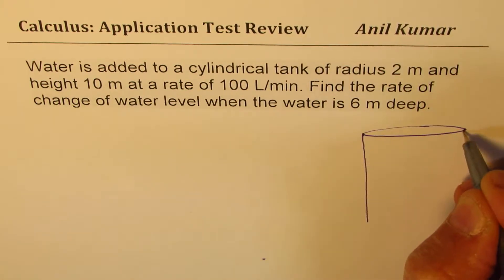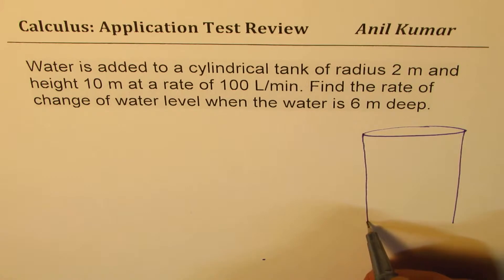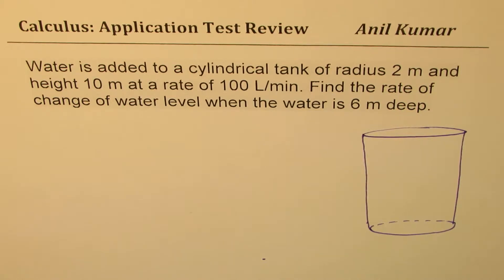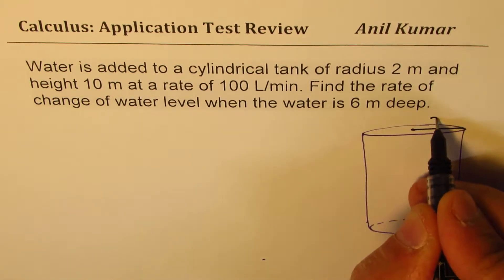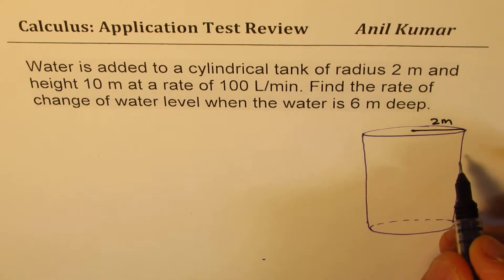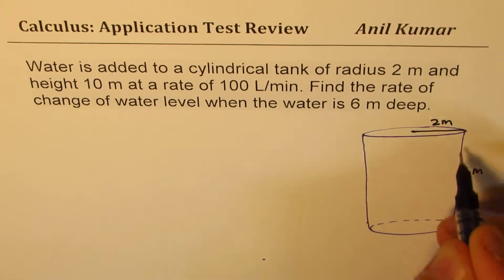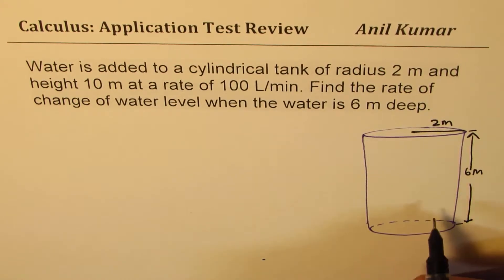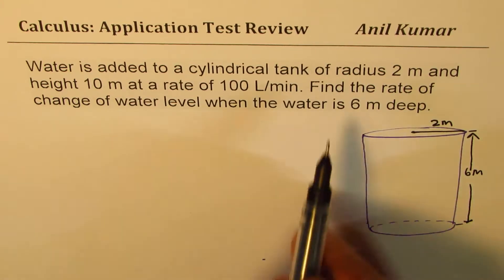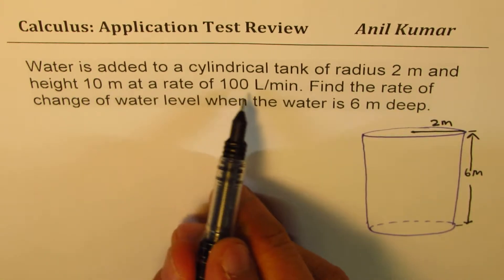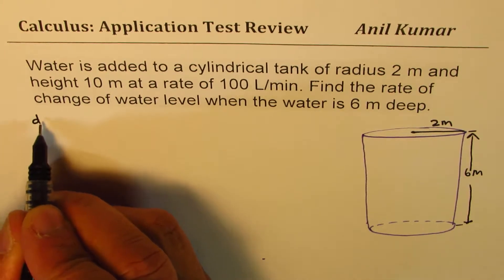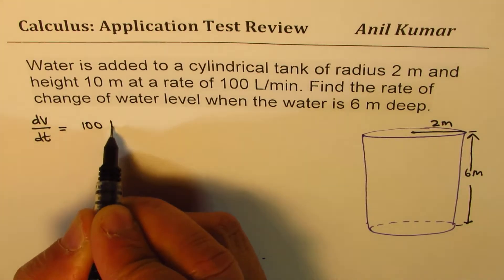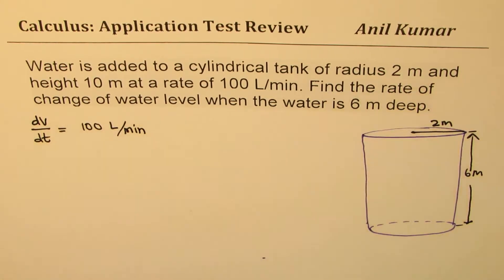So here's a small sketch. We have a cylinder which is kind of like this. We are given here that the radius is 2 meters and the height is 6 meters. We are also given that it's being filled at a rate of 100 liters per minute. So that means rate of change of volume with time is 100 liters per minute, positive since it is being filled.